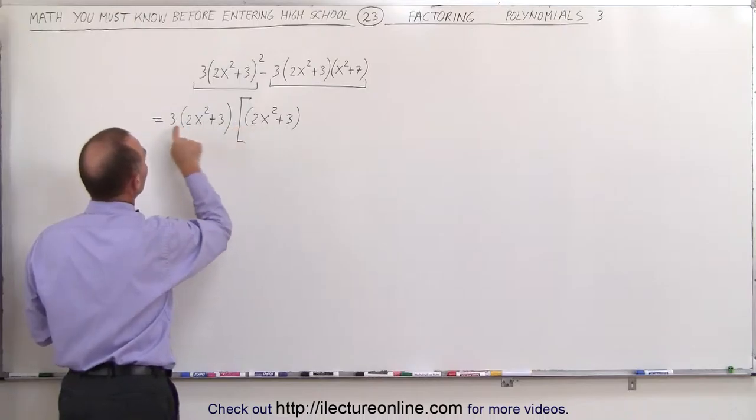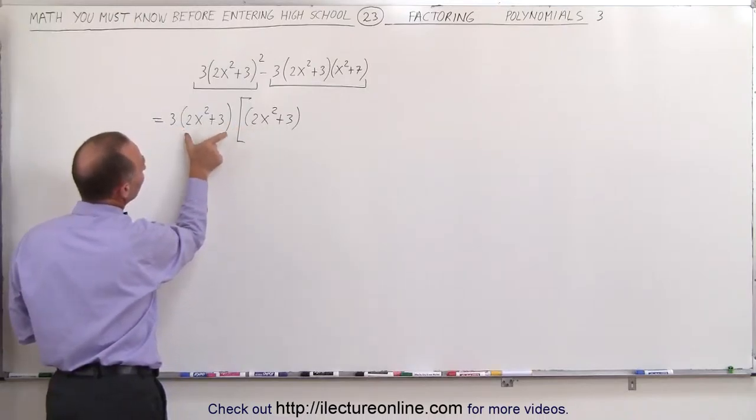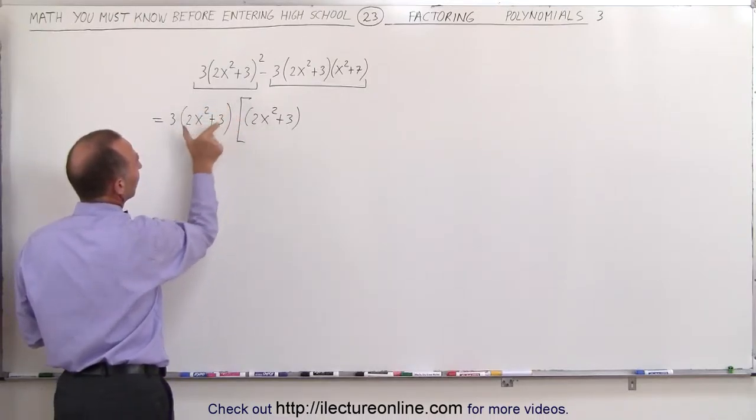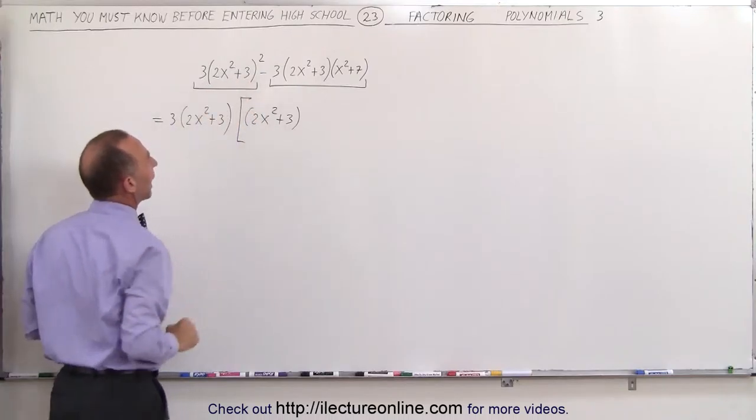if you multiply this times this, you'll get 3 times the quantity 2x squared plus 3 to the second power, because this times this gives us this back.